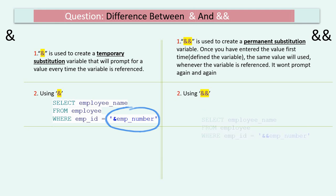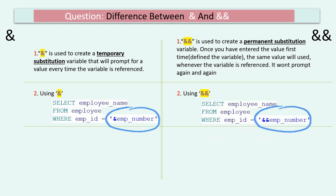Very similarly for double ampersand, we just need to give the variable name that should be prompted at runtime. When the SQL gets executed, it will prompt with that variable name, and that is where the user has to give the input.